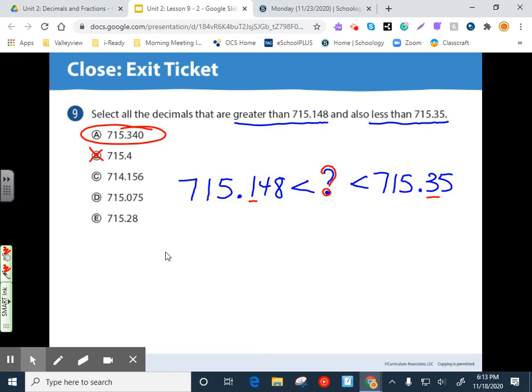714 and 156 thousandths. Now I see if it's 714, it's going to be less than these whole numbers already. So we don't even have to look further beyond that. 715 and 75 thousandths. Again, this tenths place is a 1. So that 0 would have knocked it out. And 715 and 28 hundredths. That is just less than this 35 and greater than this. So this works out. So A and E will work for that one.